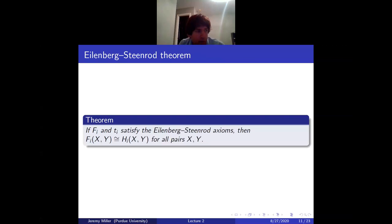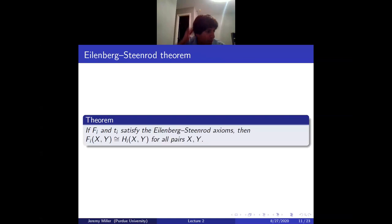This theorem isn't that hard. Restricting to CW complexes: it's true for a point. By the direct sum axiom, it's true for two points, which is S^0. Since it's a homotopy functor, you can look at a one-disk with boundary two points, apply the long exact sequence, get the answer for S^1, and keep going, et cetera. The idea is similar to how you prove singular homology and simplicial homology agree — you prove it in simple examples, they have the same properties, and use the five lemma.